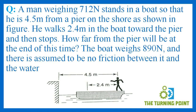A man weighing 712 newtons stands in a boat so that he is 4.5 meters from a pier on the shore. He walks 2.4 meters in the boat towards the pier and then stops. How far from the pier will he be at the end of this time? The boat weighs 890 newtons and there is assumed to be no friction between the boat and water.